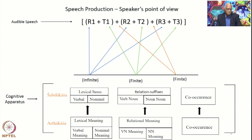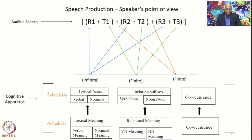This is how samasas get produced in general, and the same applies to avyaibhava, bahuvrihi, and dvandva — they will be produced in this particular manner. There will be a nominal meaning of avyaibhava, bahuvrihi, and dvandva as part of the lexical meaning in the artha-kasha, corresponding to which there will be nominal words in the shabda-kasha as lexical items, giving rise to further processes and finally expressing the cognitive apparatus in the form of audible speech elements. This is how samasas get produced from the point of view of the speaker.